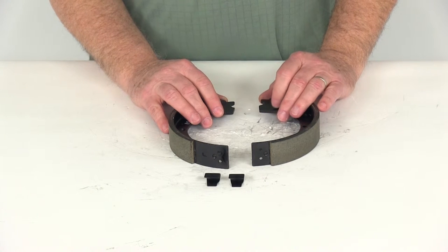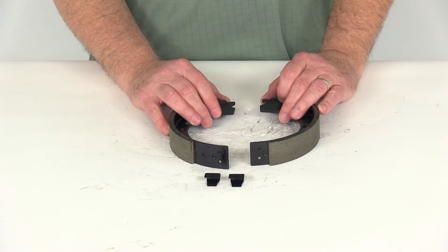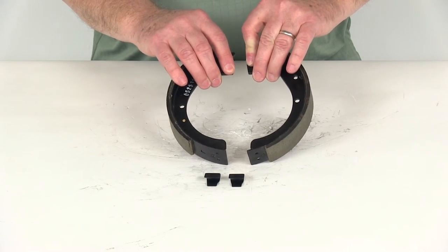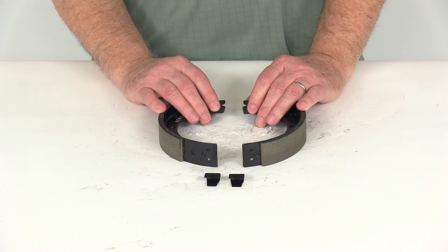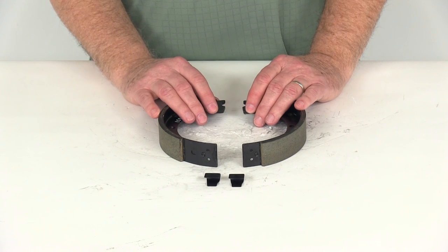These parts are certified for SAE standards and CSA standards (Canadian standards). When installed, these are designed to be used with 7-inch drums. That should do it for the review of the replacement electric brake shoe and lining kit for 7-inch brake assembly on 2,000-pound axles.